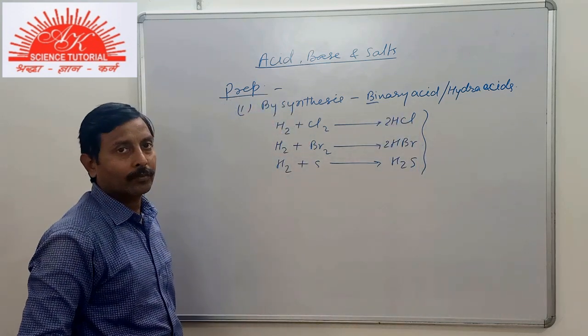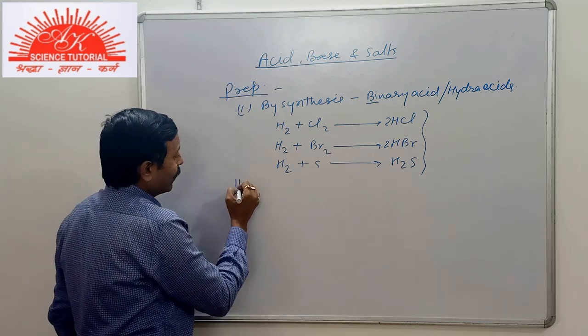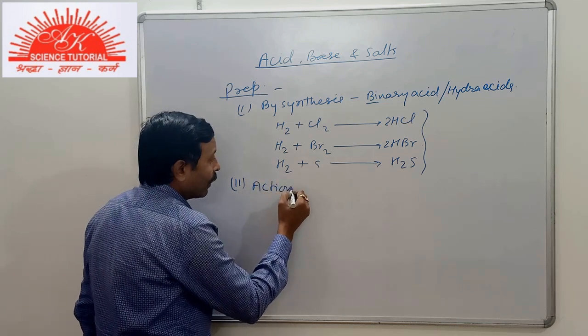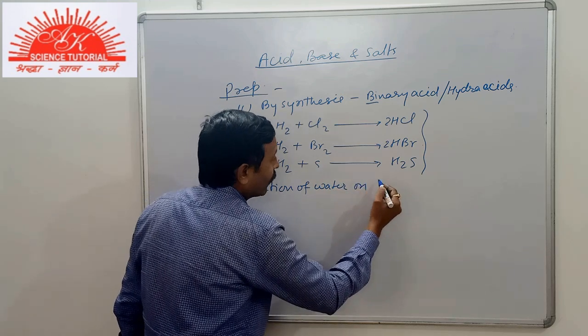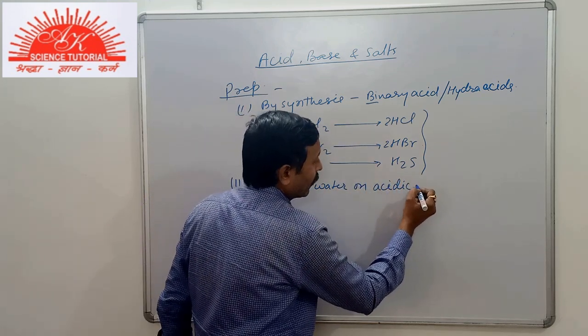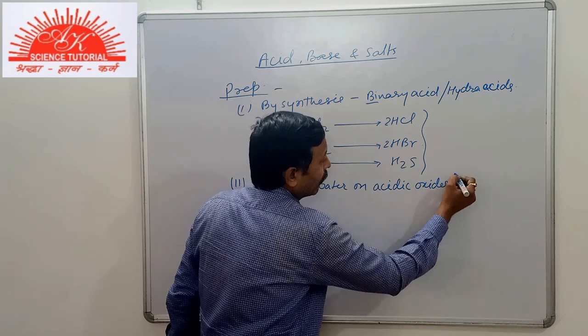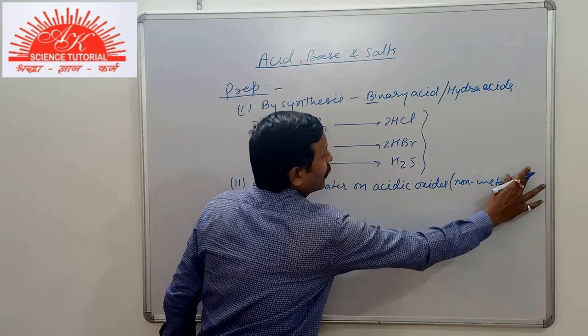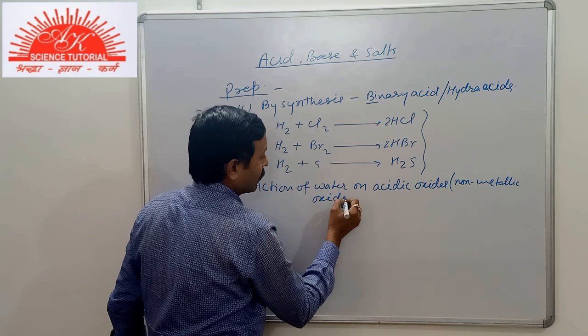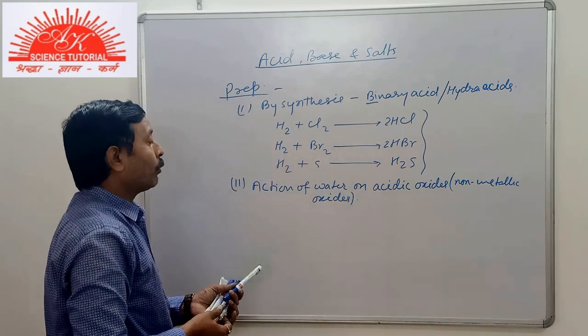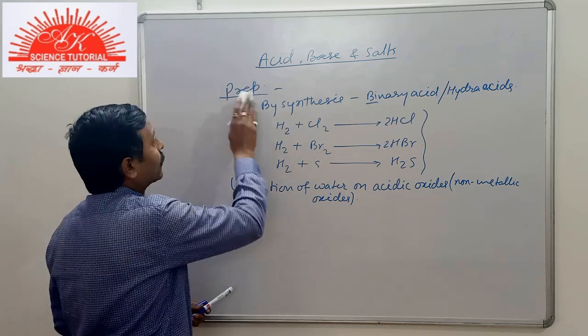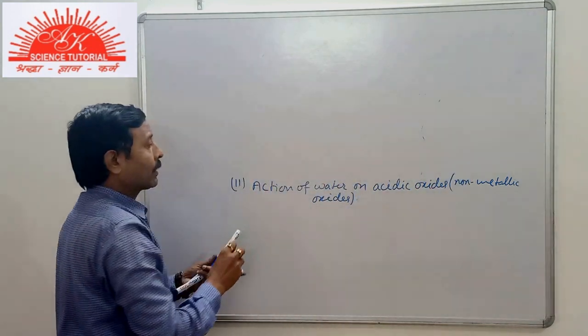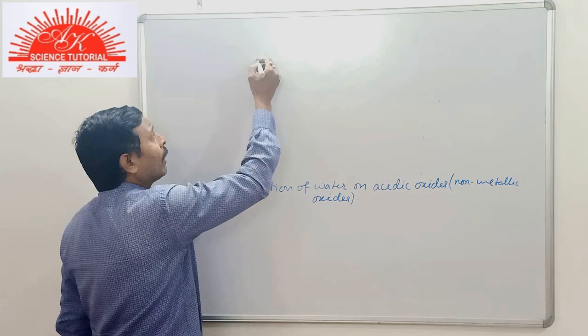Now, the second method of preparation is action of water on acidic oxides. Acidic oxides which are non-metallic oxides. We know that metals form basic oxide in general and non-metallic oxides, although there are some exceptions. But we have to prepare acids by action of water.